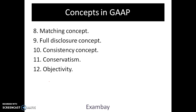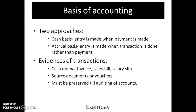The last concept is objectivity. The objectivity concept states that accounting information should be recorded in an objective manner, free from the bias of accountants and others. This is possible when every transaction is supported by a verifiable document. There are also two approaches — basis of accounting. In cash basis, entry is made when payment is made, not when the actual transaction happened. In accrual basis, entry is made when the transaction is done, rather than when payment is received.